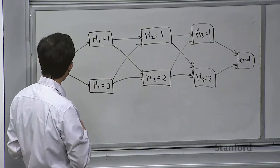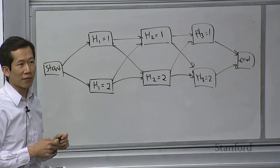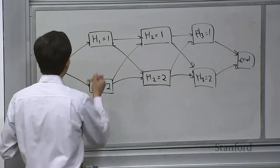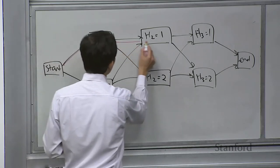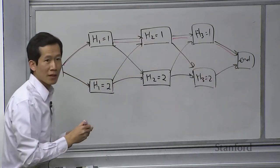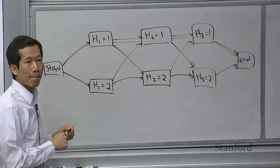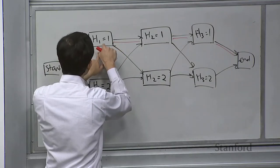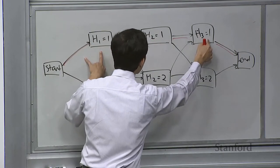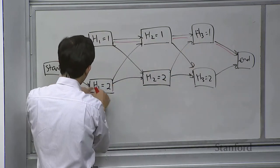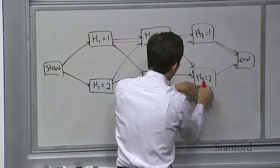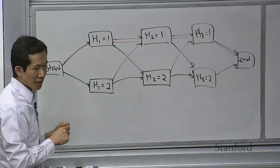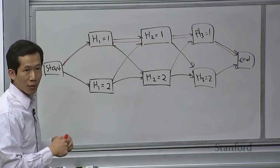A path from start to end in the lattice is a particular assignment of the hidden variables. For example, one path sets H_1=1, H_2=1, H_3=1, and another sets H_1=2, H_2=1, H_3=2. Every path from start to end is an assignment to all of the hidden variables.